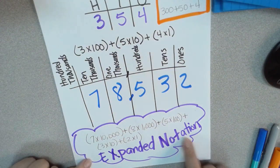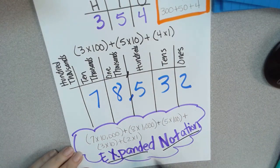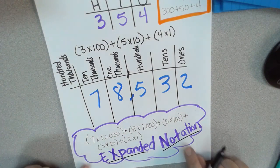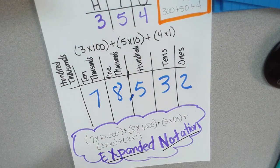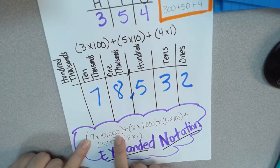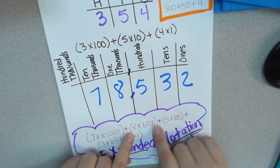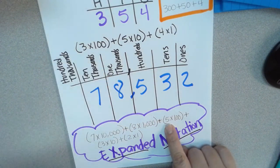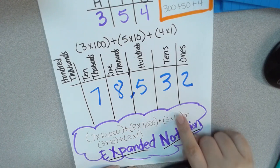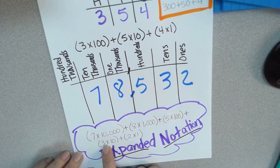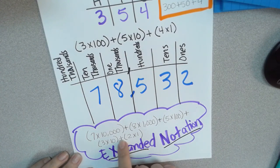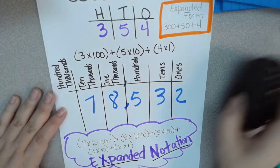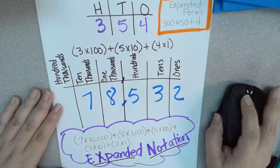One more time — expanded notation is different from expanded form. When you're doing expanded notation, think parentheses and multiplication sign. You get the number times the place value, and then you take the sum — so you're adding them all together: open parenthesis, the number times the place value, close parenthesis, plus the next number times the place value, and so on. That will give you the expanded notation. And that is it for today!